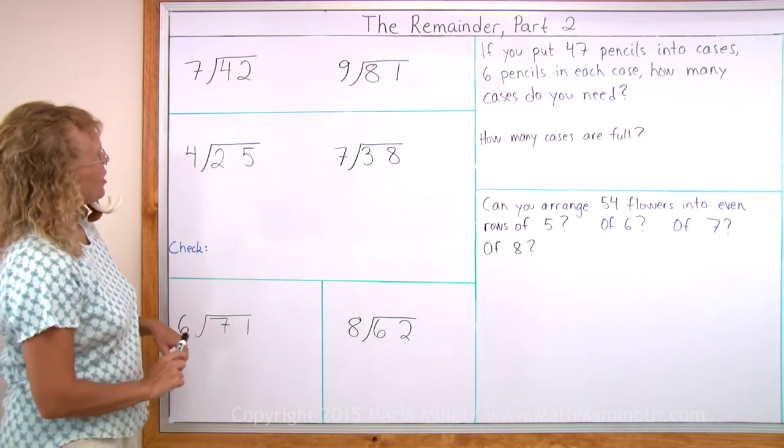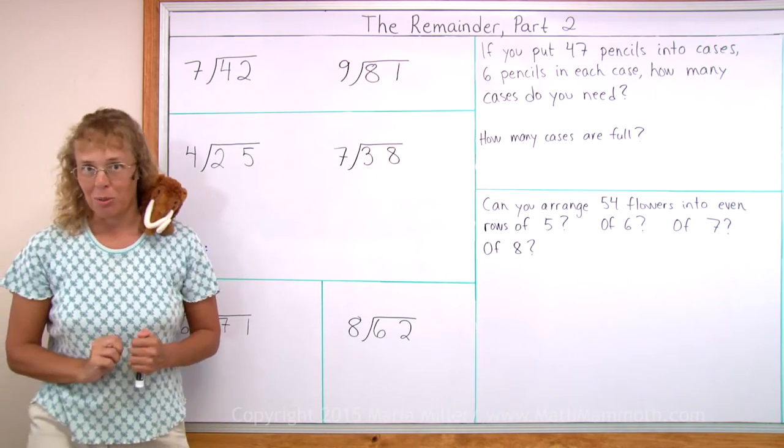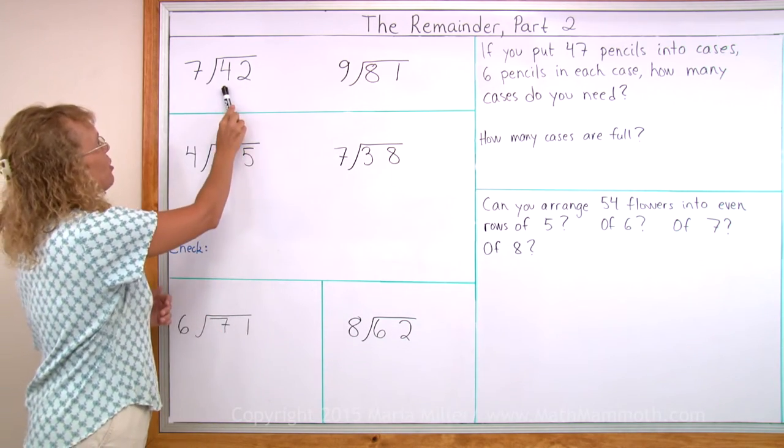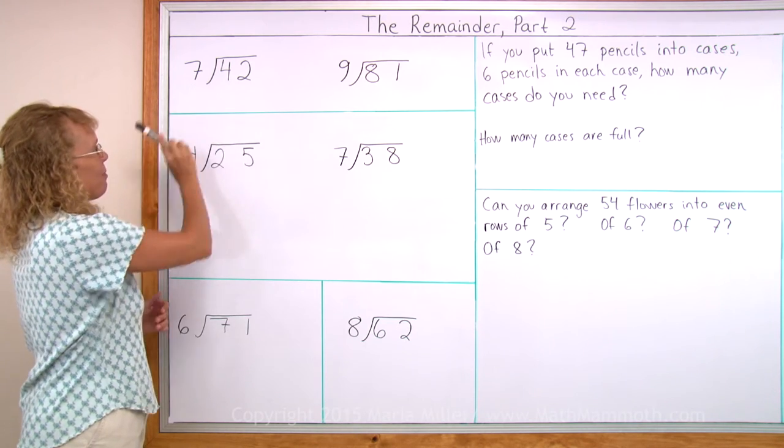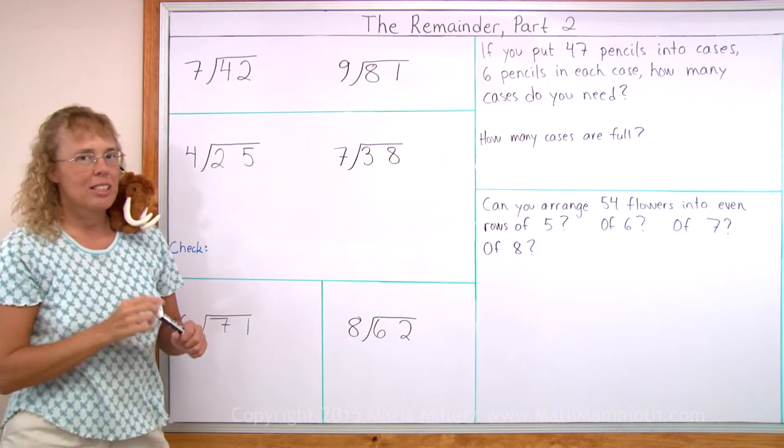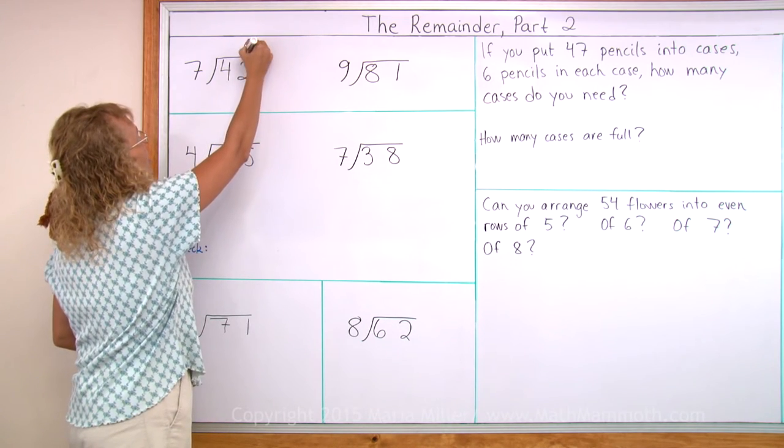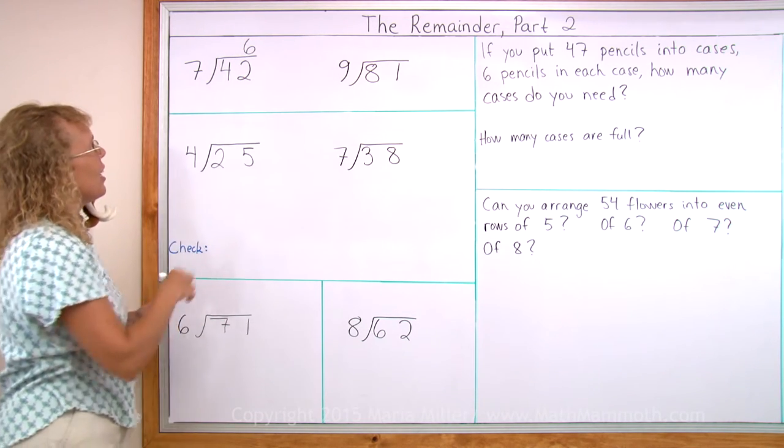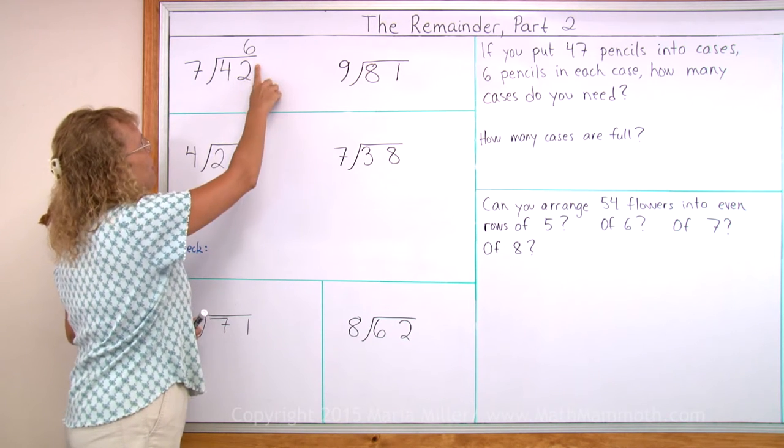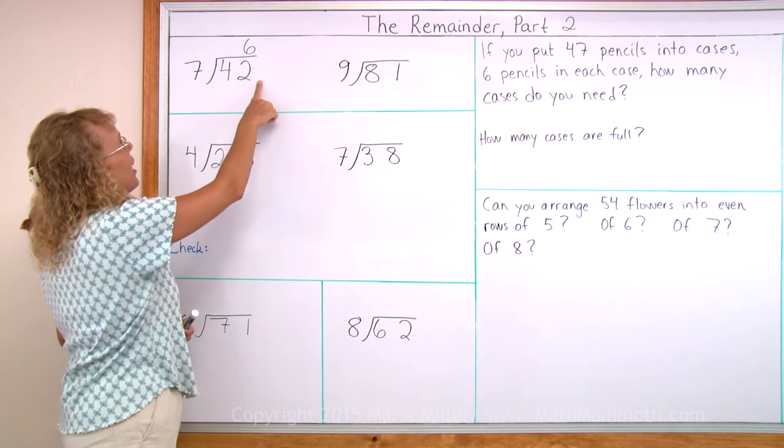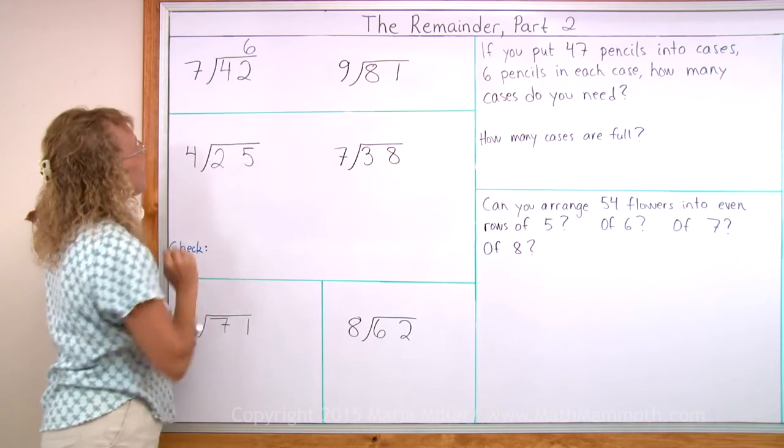But first, here is another way to write division problems. This problem is 42 divided by 7. 42 divided by 7 equals 6, and I write the 6 here on top, on top of the line. And I try to write the 6 on top of the 2 because it is in the 1's place. There's going to be 1's and 10's like that.